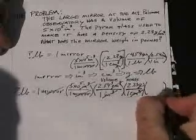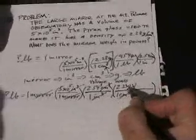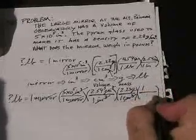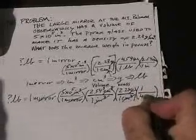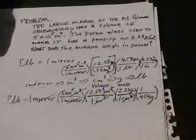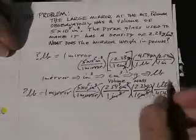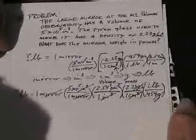Last conversion factor. Grams to pound. One pound. Whoops, I better do what I said. 454 grams is one pound. At least to three significant figures. All right. So there's the problem worked out.